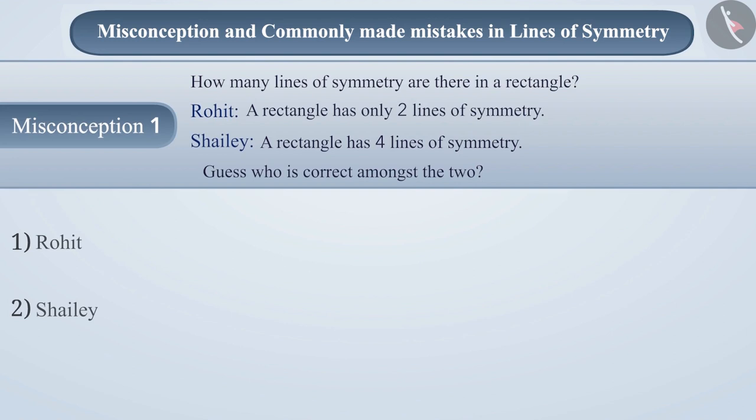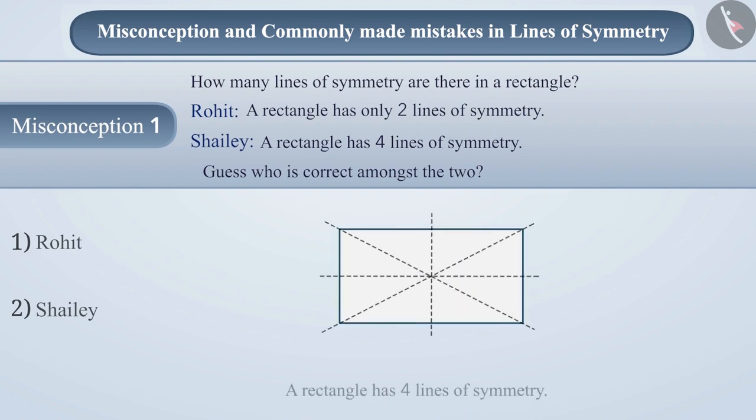Many times, there is a misconception among students that a rectangle has four lines of symmetry. The reason behind this is that, along with the vertical and horizontal lines, students consider the diagonals also as the line of symmetry.